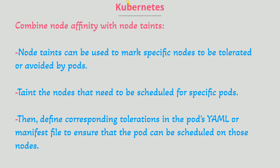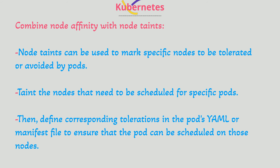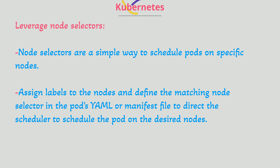Combine Node Affinity with Node Taints. Node Taints can be used to mark specific nodes to be tolerated or avoided by pods. Taint the nodes that need to be scheduled for specific pods. Then, define corresponding tolerations in the pod's YAML or manifest file to ensure that the pod can be scheduled on those nodes.